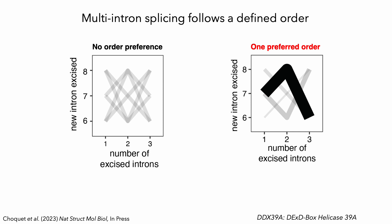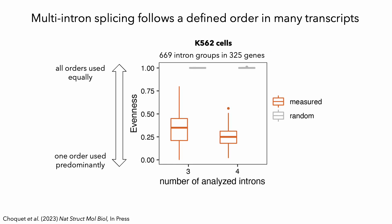This was really exciting because it was our first indication that multi-intron splicing follows a defined order. We can use a metric called evenness to quantify this, where an evenness of one indicates a completely random splicing order and a lower evenness value indicates that there are some predominant splicing orders. We next applied our analysis strategy to all intron groups with sufficient coverage in human K562 cells, and found similar results where simulating random splicing orders led to an evenness of one, whereas our measured splicing orders had much lower evenness values with medians below 0.4 for groups of three or four consecutive introns.